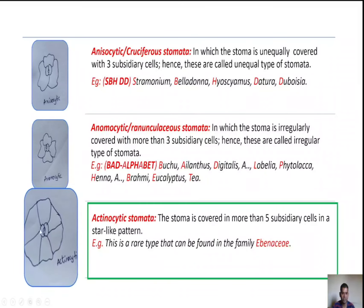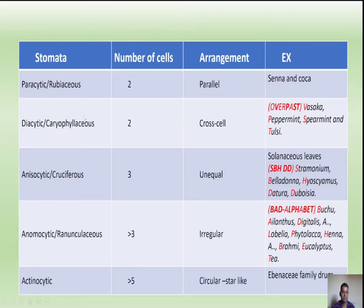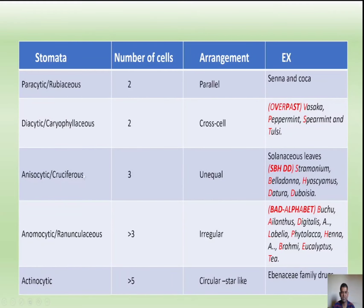Now a summary of stomata. Parasitic (rubiaceous): two subsidiary cells arranged parallelly — examples Senna and Coca. Diacytic (cariophylaceous): two subsidiary cells arranged crossly or perpendicularly — examples Vasaka, Peppermint, Spearmint, and Tulsi. Anisocytic (cruciferous/solanaceous): three cells arranged unequally — examples Stramonium, Belladonna, Hyoscyamus, Datura, Duboisia.